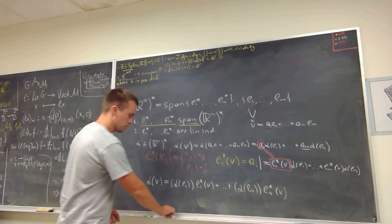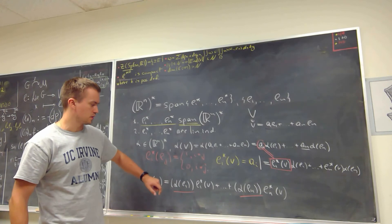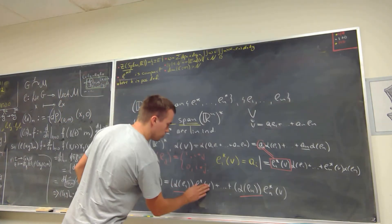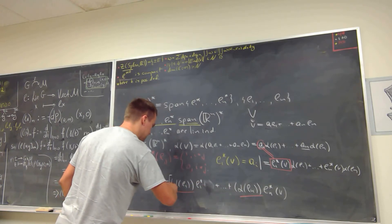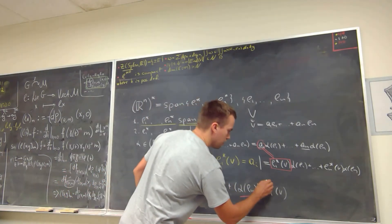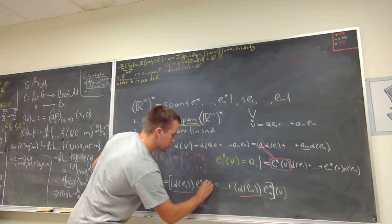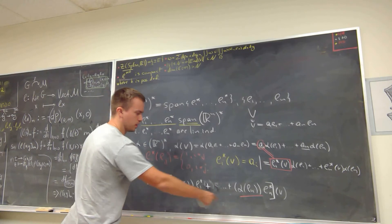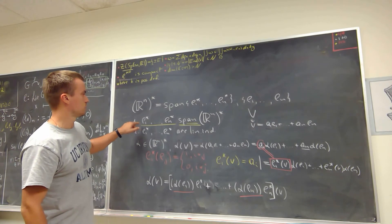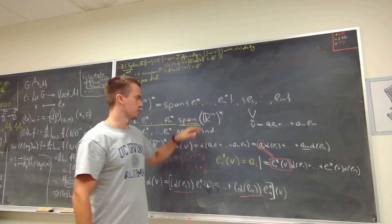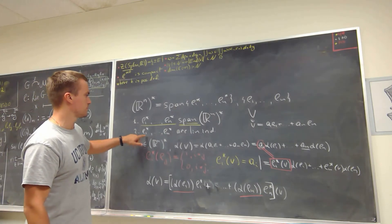Every expression of this form is a constant, and if we factor the dual vectors, we can see that α is written as a linear combination of dual vectors times some constants. This means the dual vectors span R^n dual. The next step is to show that these vectors are linearly independent.